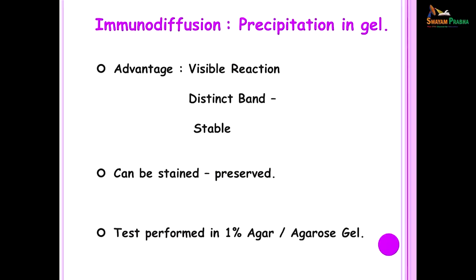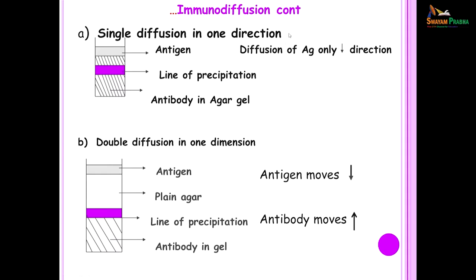Now I move on to immunodiffusion tests. These tests use the principle of precipitation in gel, and the advantage is that the reaction is easily visible because of a distinct band. These bands are stable, they can be stained and preserved, and the test is performed in 1 percent agar or agarose gel. The immunodiffusion test consists of single diffusion in one direction. Agar is a transparent substance that solidifies at room temperature. If we take agar to which we have added antibody and pour it into a test tube, then layer antigen on it, the antigen will diffuse into the antibody-containing gel and you get a line of precipitate — this is single diffusion in one direction.